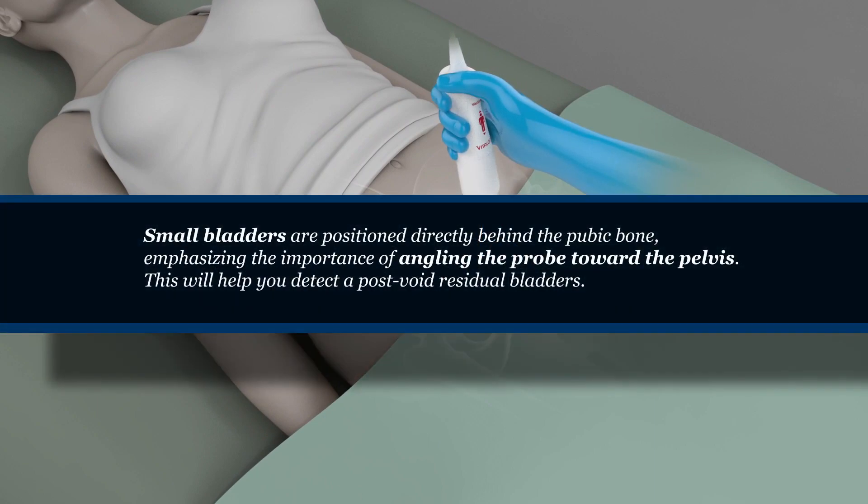Important to know: small bladders are positioned directly behind the pubic bone, emphasizing the importance of angling the probe toward the pelvis. This will help you detect post-void residual bladders.